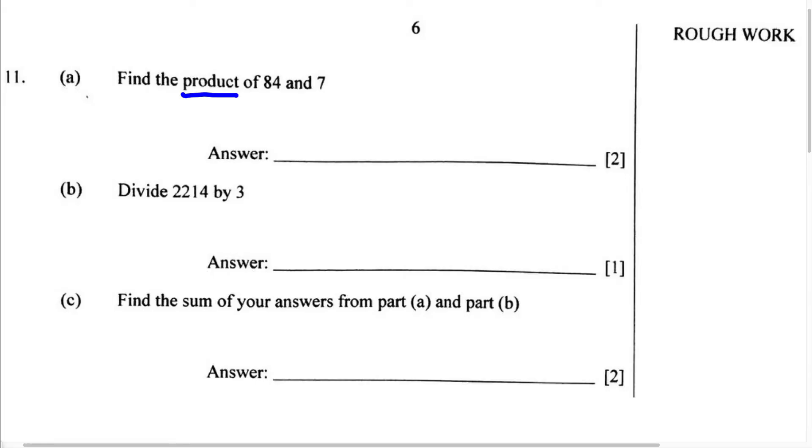So all we're going to do to find the product of 84 and 7 is we're just going to multiply 84 by 7. So we can set this up as 84 multiplied by 7.